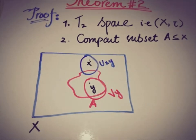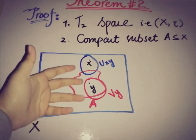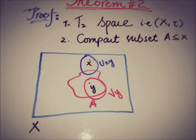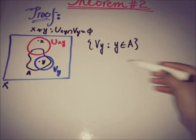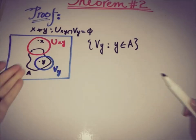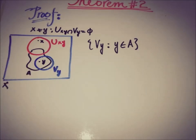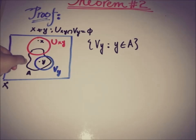The open set containing x is represented by U_{x,y} and the open set containing y is represented by V_y. It is clear that U_{x,y} and V_y are disjoint from each other. If we draw the open sets about each element of A, we get a collection of such open sets.